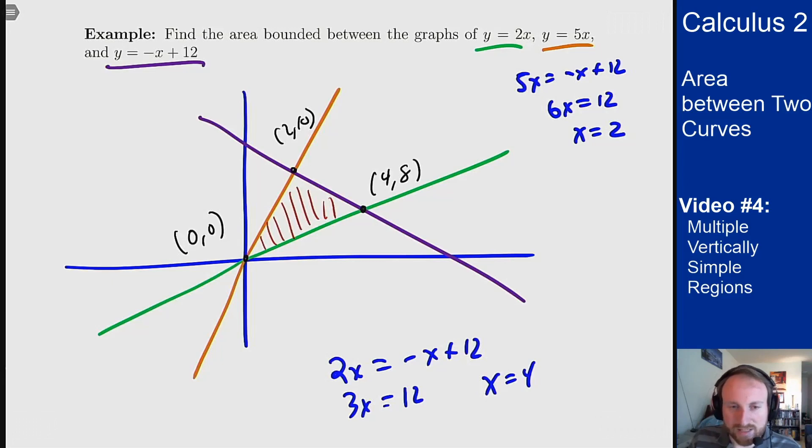Now what that means is if I draw a vertical line down here at 2, I will now have split my region into two chunks, each of which are vertically simple. One has orange on top, green on bottom. One has purple on top, green on bottom. So I can find those two areas on their own, and then add them up.